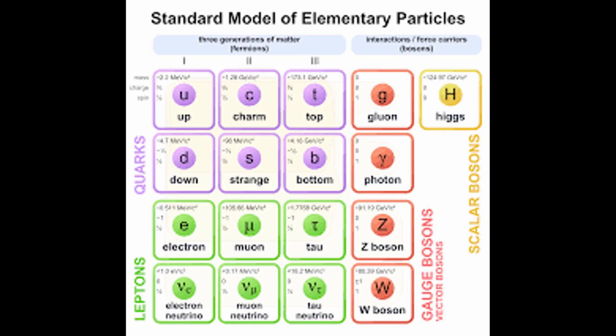The only problem in the standard model of particle physics is that it cannot incorporate the force of gravity. Since the force of gravity does not exist and gravity is actually the quantum magnetic force, there is no need to incorporate gravity in the standard model. A number of theories dealing with gravity have been considered, such as gravity being a force extended from a parallel universe, multiverse theory, string theory, and the possible existence of a graviton particle.